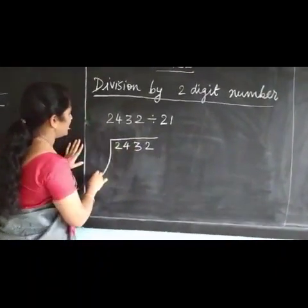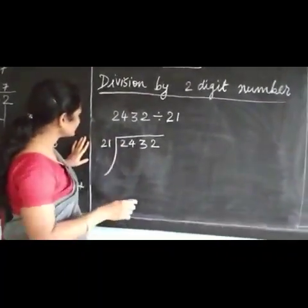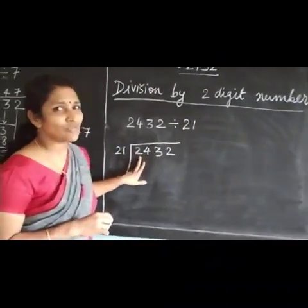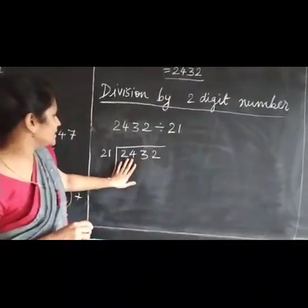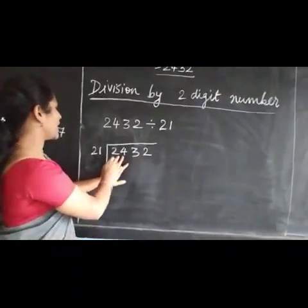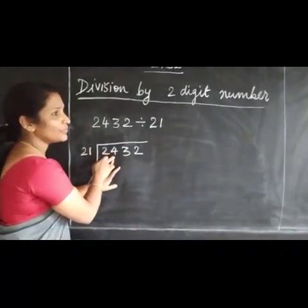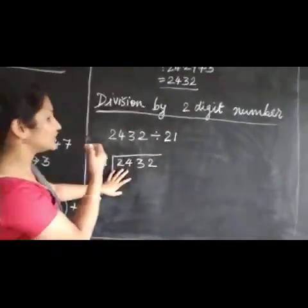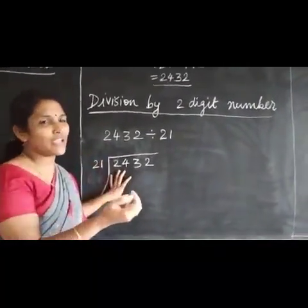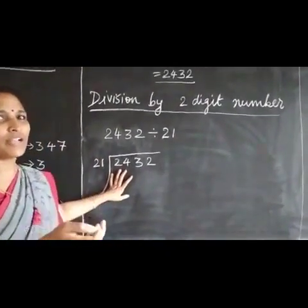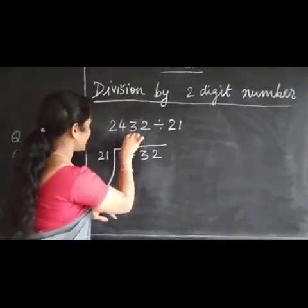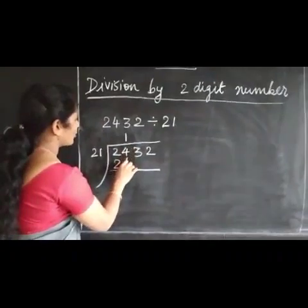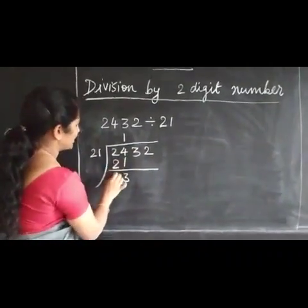2432 divided by 21. First we consider two digits. We need not look at just one digit — we have to consider both digits. Can we take 21 from 24? Yes, 24 is bigger than 21. Since we know the table of 1, and 21 ones are 21, we write 1 above. 4 minus 1 is 3, 2 minus 2 is 0.